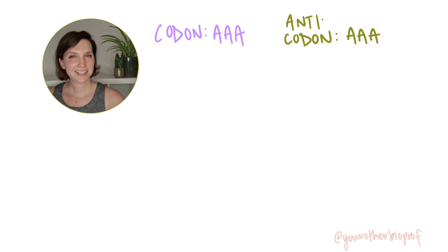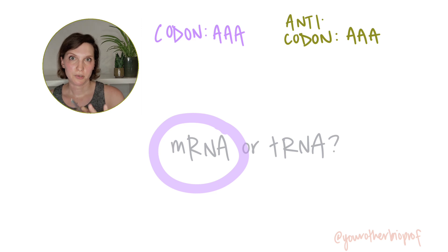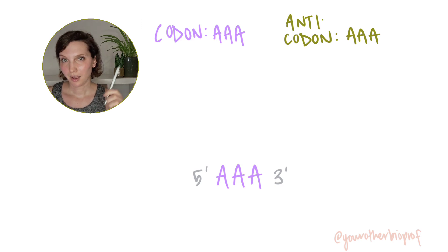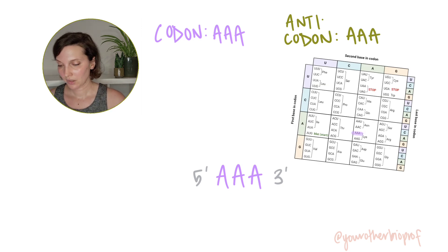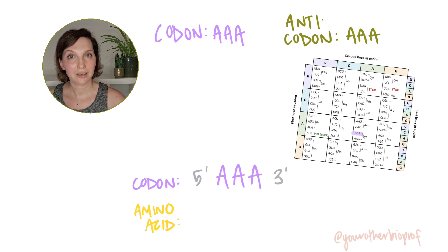Remember I said you could have a codon with the sequence AAA, or an anticodon with the sequence AAA. A codon with the sequence AAA would be on the mRNA, right? Just like the ribosome does, we're going to read these sequences five prime to three prime. So we've got five prime AAA three prime. We can take that over to our codon table, and we get lysine. So when we're ready to add the next amino acid to our growing polypeptide chain during translation, if the next codon is a five prime AAA three prime codon, the next amino acid is going to be lysine.